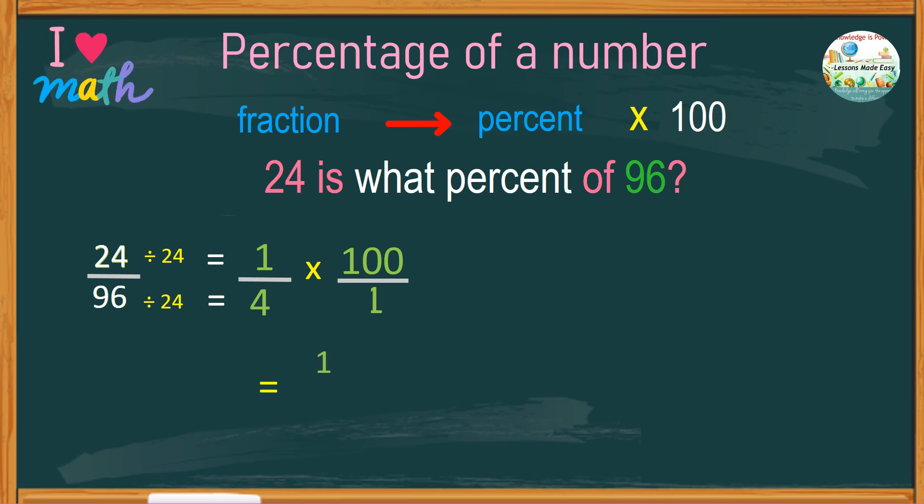We now have 100 over 4 or 100 divided by 4, which is 25. So, 24 over 96 is 25%.